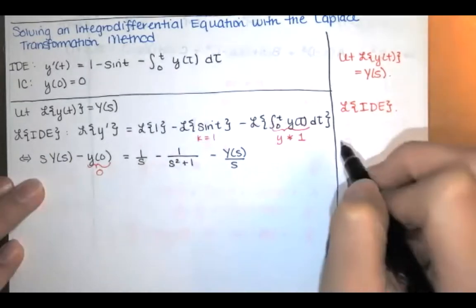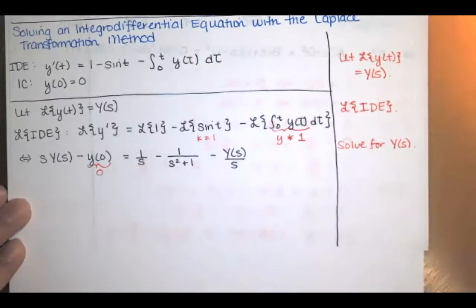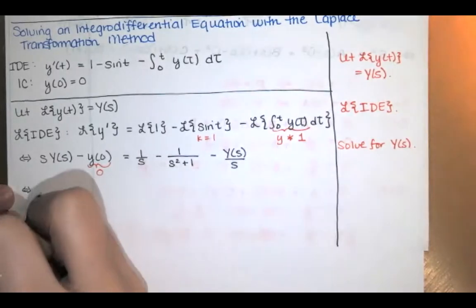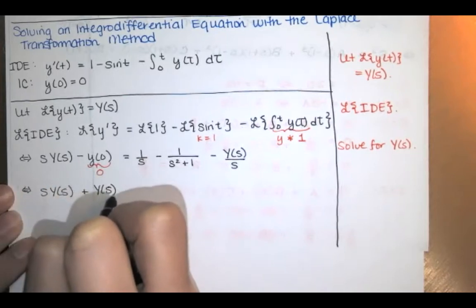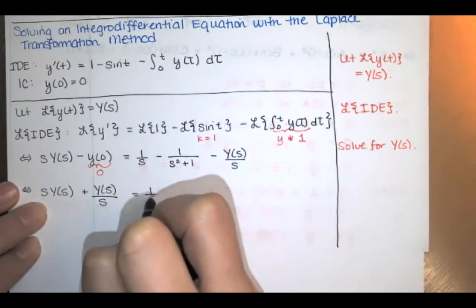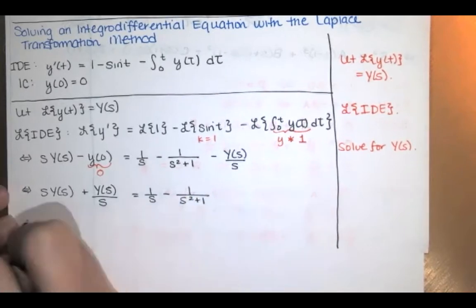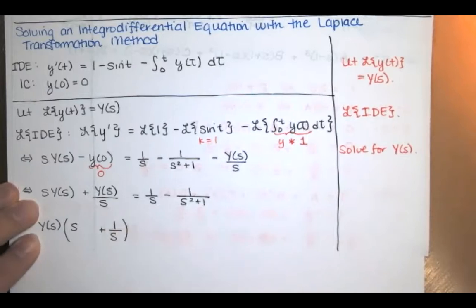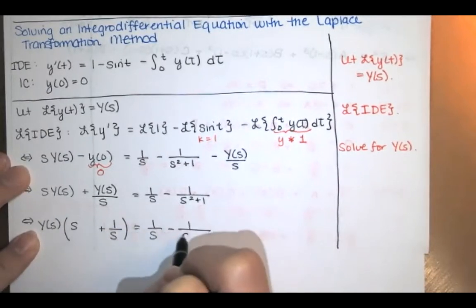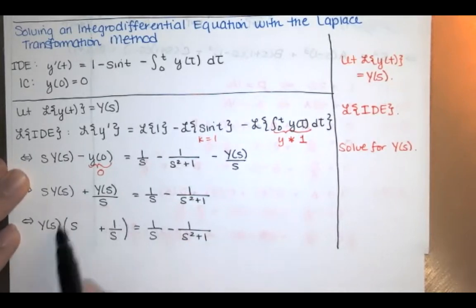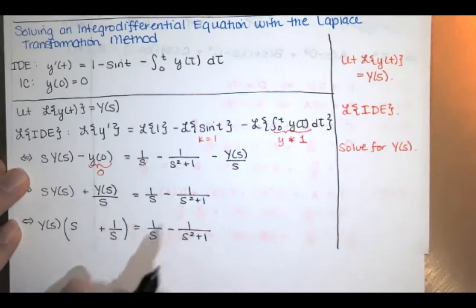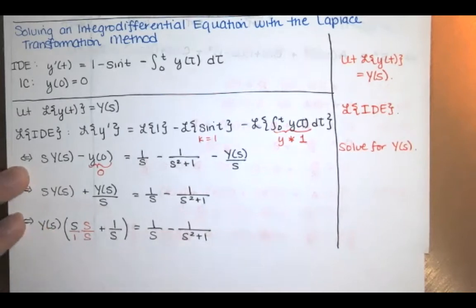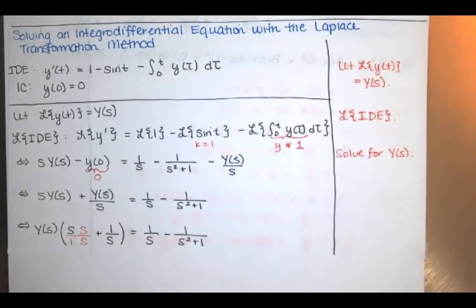Now we just want to solve for Y(s), then compute the inverse transform. I'll add the 1 over s times Y(s) term to both sides and factor out Y(s). I would highly recommend getting a common denominator rather than dealing with complex fractions. Since the common denominator is s, I multiply by s over s, giving s² plus 1 over s on the left-hand side multiplying Y(s).